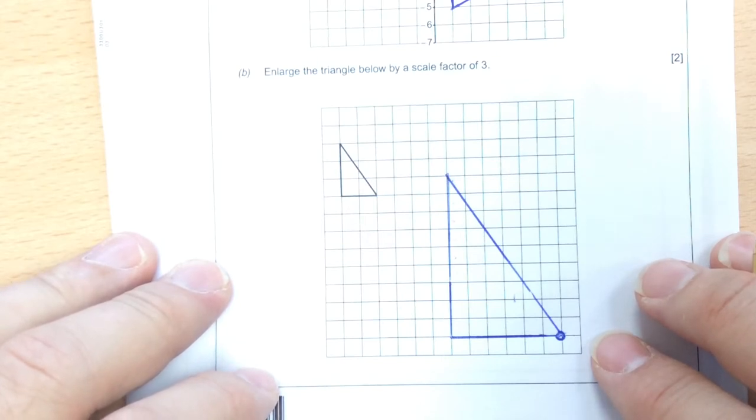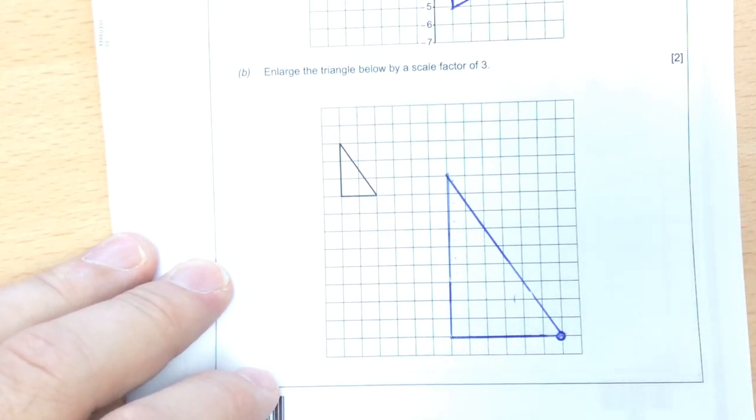If it was scale factor 2, it becomes twice as big. If it was scale factor 4, it becomes 4 times as big. So you multiply by however much it's enlarged by.